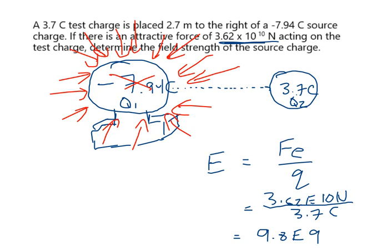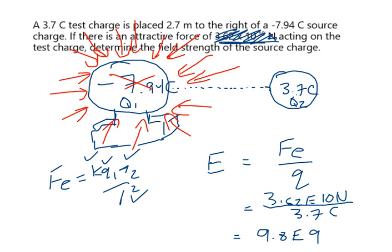Hypothetically, if I hadn't given you the force, you'd have to solve Fe = KQ₁Q₂/r² first. We have charge 1, charge 2, the radius, and the constant — we could solve for the force and then use that to find field strength. I just made it simple by giving you the force.